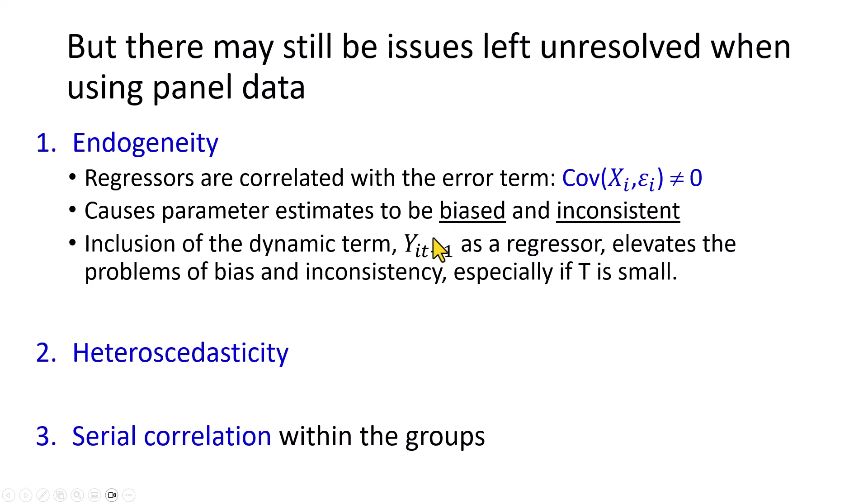And also, the inclusion of the dynamic term of the lag-dependent variable as a regressor elevates the problem of bias and inconsistency, because as you can see, the lag term would be naturally correlated with the corresponding error term in its time period. And this problem is heightened in cases where the time period is short. Additional problems are heteroskedasticity, which is unequal error variance, and serial correlation, or auto-correlation, of the residuals.